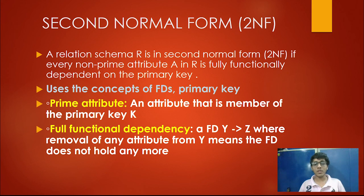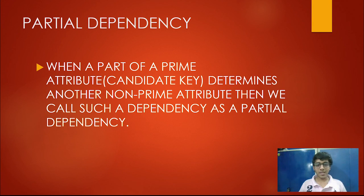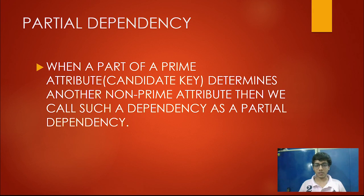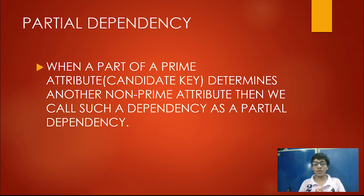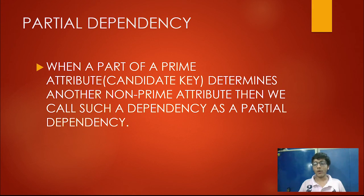In second normal form, we try to remove partial dependencies. A partial dependency occurs when a part of a prime attribute (candidate key) determines a non-prime attribute. Prime attributes are those that are candidate keys; non-prime attributes are those that are not candidate keys. For example, if a table has four attributes A, B, C, D, and A and B are primary keys, then A and B together is the prime attribute, while C and D are non-prime attributes.